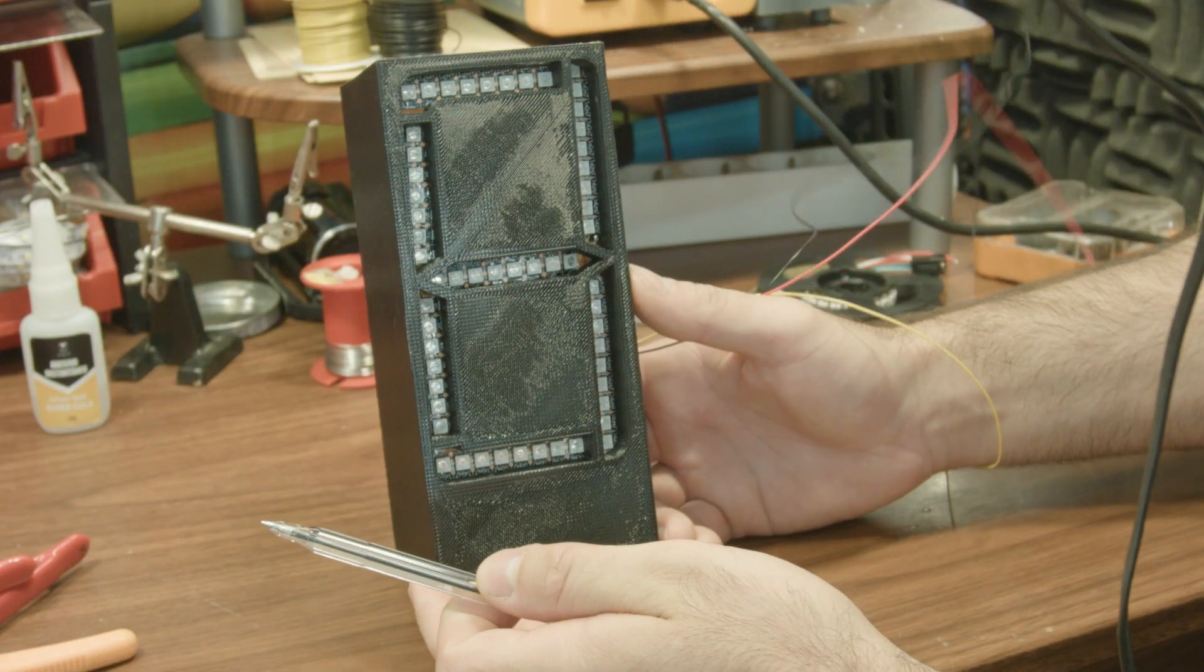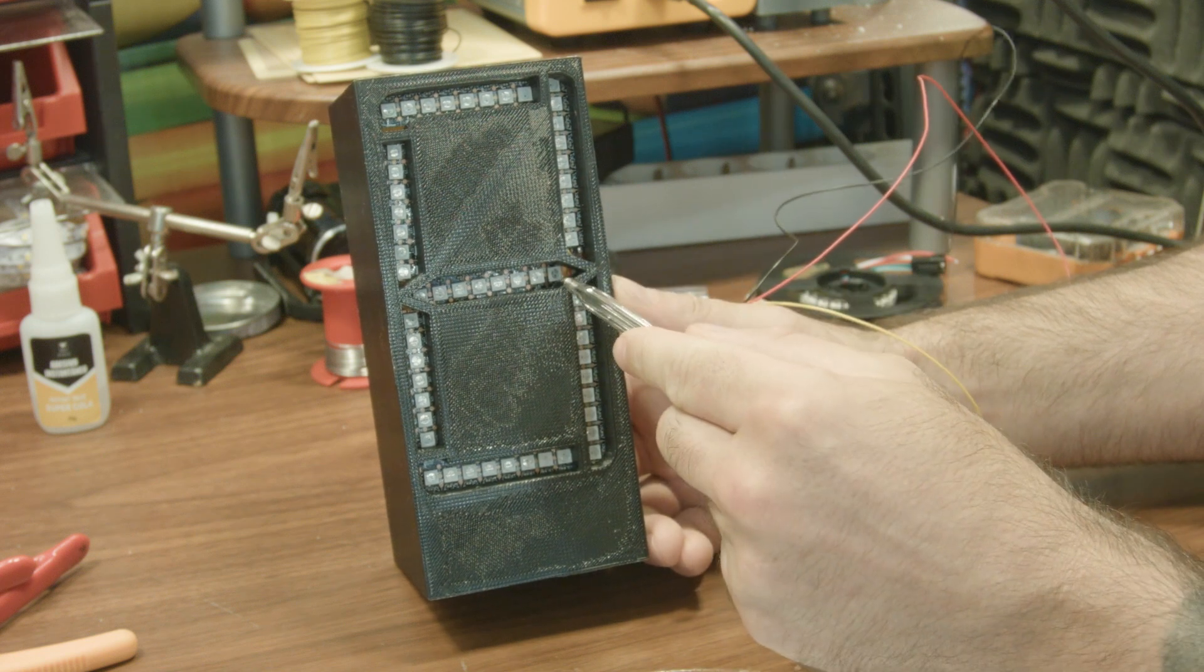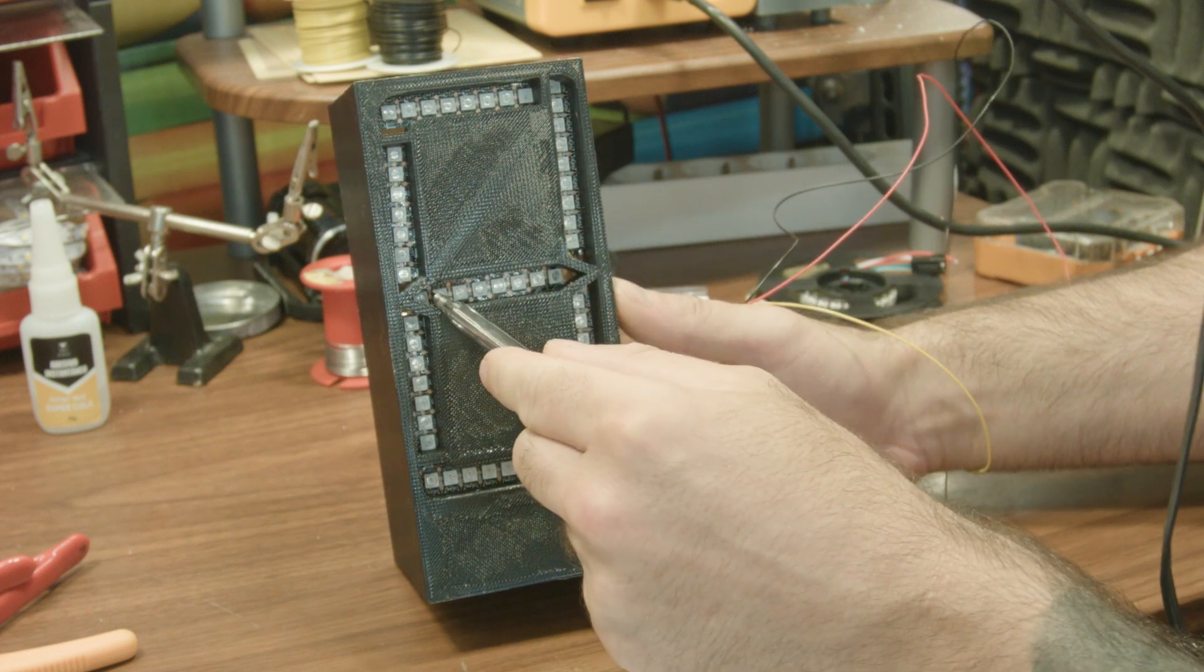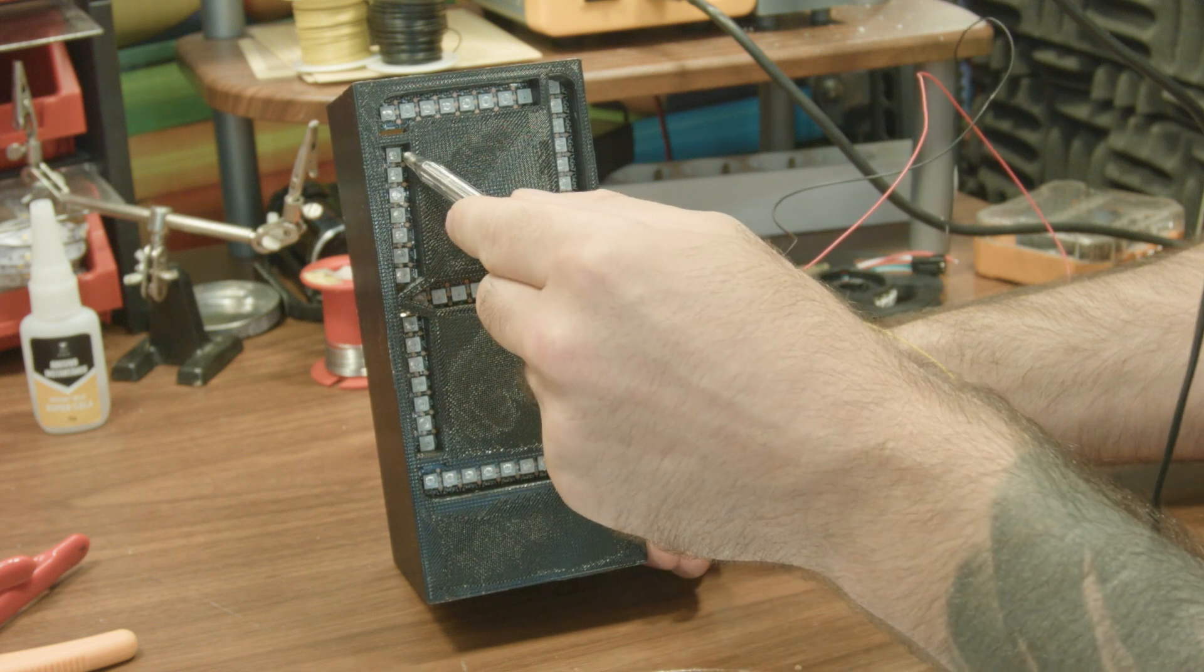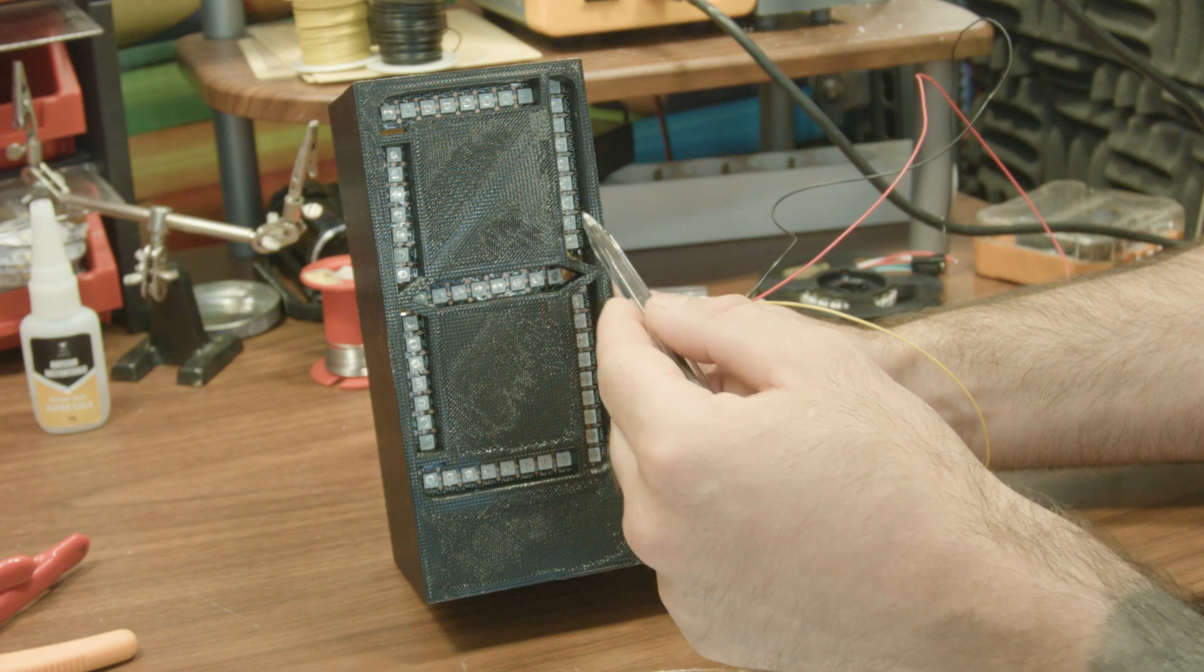A couple things to note would be the order in which these sections are connected. The data wire comes in here first, making this segment number 1, then jumps here, making it segment number 2, then goes around 3, 4, 5, 6, and 7.